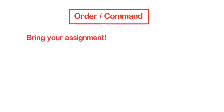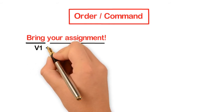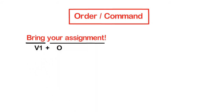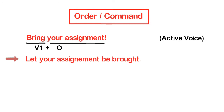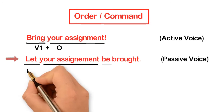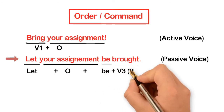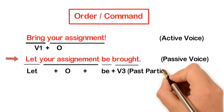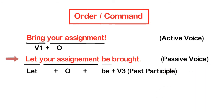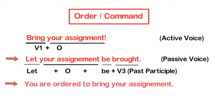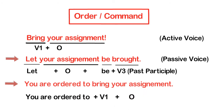Let's have some examples for each one. 'Bring your assignment' — first form of the verb + object — is an active sentence. The passive voice will be: 'Let your assignment be brought.' That's: Let + object + be + third form of the verb (past participle). You can also use: 'You are ordered to bring your assignment' — You are ordered to + first form of the verb + object.